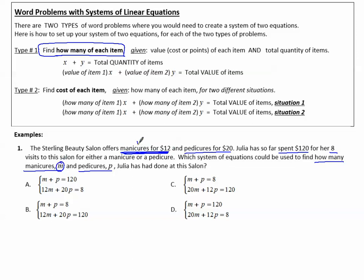So where it says manicures, I'm going to put an M. And I noticed that the 12 is next to the M. So that's the value of item one times the first variable. So that's the 12 gets multiplied to the M.